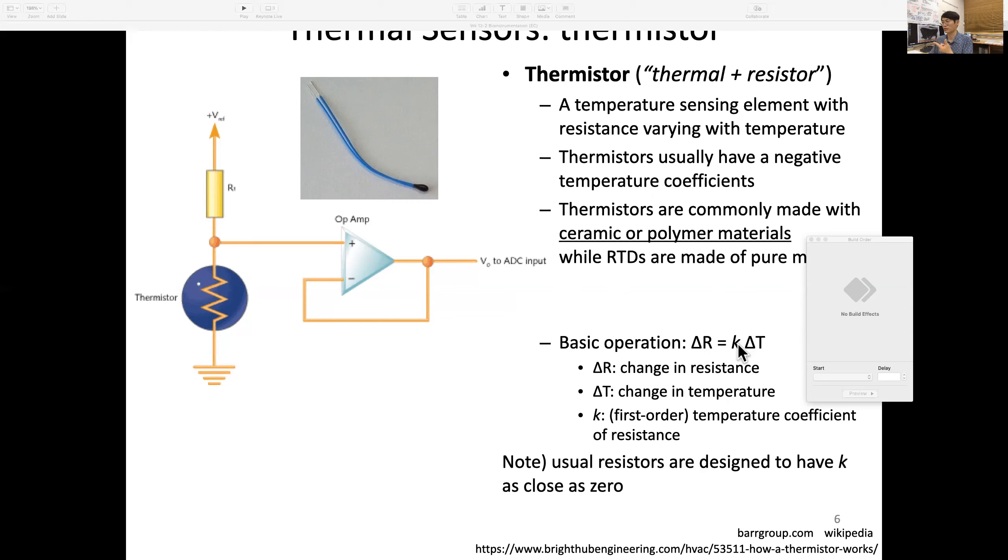Look at this data comparing RTD versus thermistor. You see much larger resistance changes, so it has higher gain or sensitivity. Also, the slope is opposite—when temperature rises, the thermistor's resistance actually goes down.